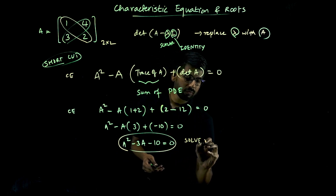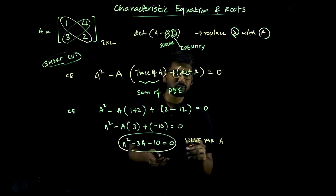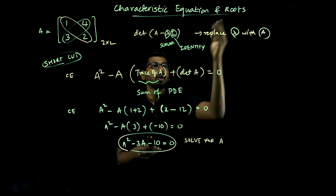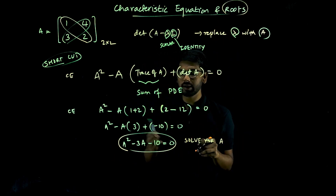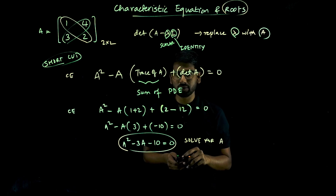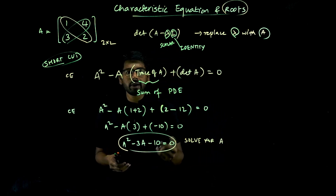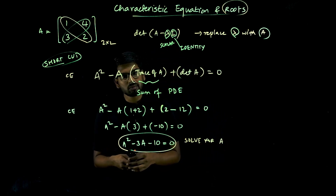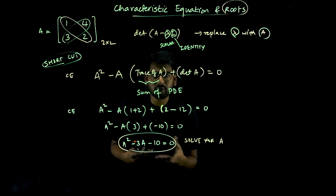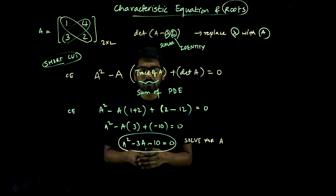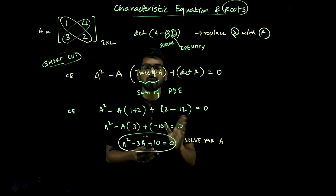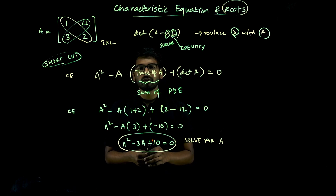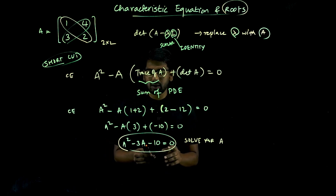If we solve for lambda, those values are the roots of the characteristic equation. How do you solve a quadratic equation? You can use factorization. You can use the formula x equals minus b plus or minus square root of b squared minus 4ac, all over 2a — the quadratic formula.